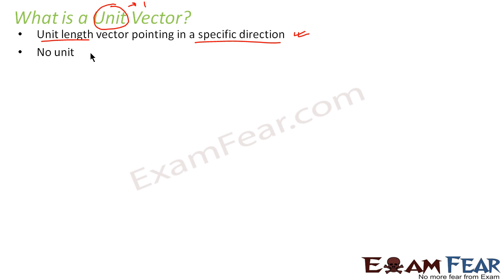A unit vector does not have any unit. The vector does not have a unit because it is the ratio of two quantities which have the same unit. I hope you understand the difference between this unit and this unit. This unit is talking about the units which we use to measure quantities like meters, seconds, kilometers, and all such units.